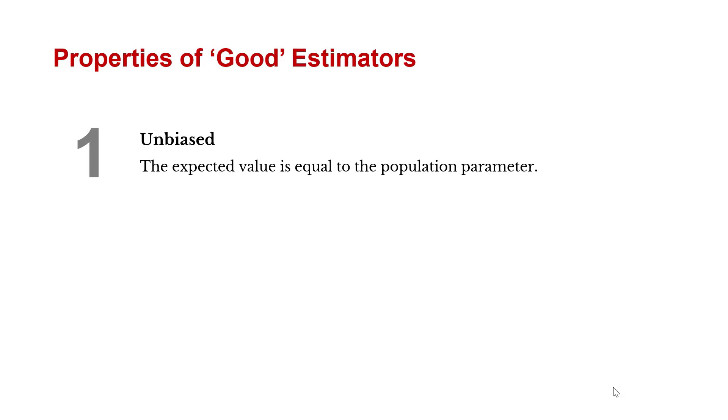The first, and this is pretty common sense, is that it's unbiased. The expected value is equal to the population parameter. We want the estimate that we get to be close to the actual value.